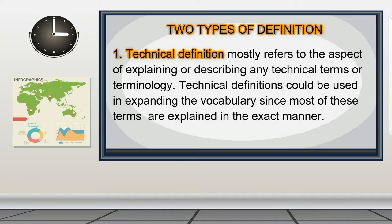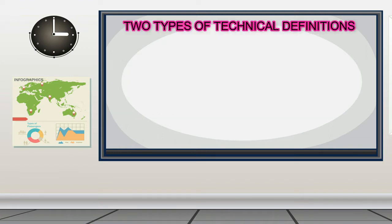Technical definition mostly refers to the aspect of explaining or describing any technical terms or terminology. Technical definitions could be used in expanding the vocabulary since most of these terms are explained in the exact manner. There are two types of technical definitions: parenthetical definition and sentence definition.